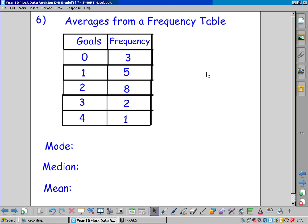Finding averages from a frequency table should be fairly straightforward. The mode is the one that comes up the most.